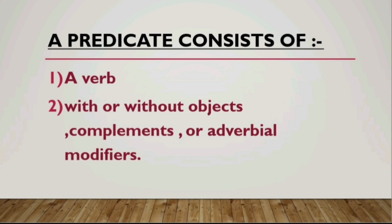Let's talk about the components of a predicate. First, a predicate may consist of only a verb. Sometimes a predicate may also consist of a verb along with objects, complements, adverbial modifiers, etc. So a sentence could contain just a verb, or it can also contain a verb with complements, adverbial modifiers, and objects — and predicate is one part of that whole composition.